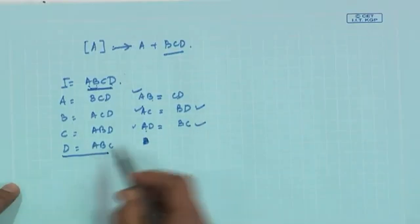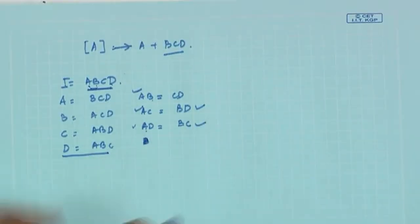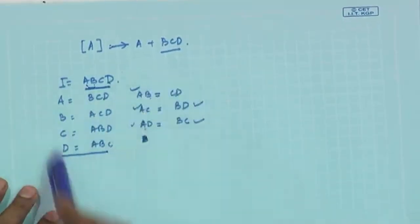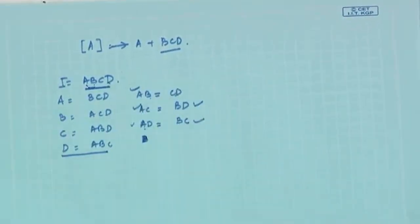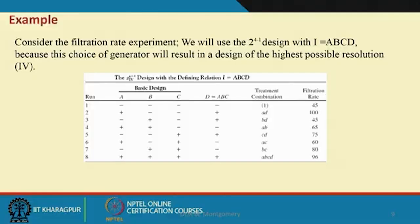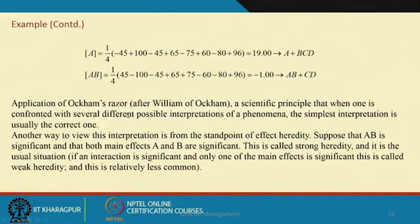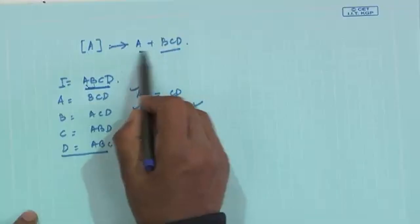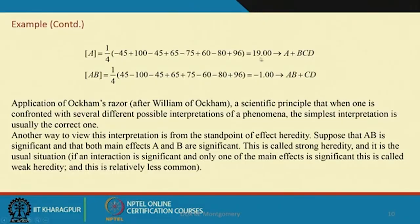Using this data, when you compute the effect of A you are basically computing A plus BCD, because of the alias structure. I equals ABCD; if you multiply with A you get BCD; with B you get ACD; with C you get ABD; with D you get ABC. So A bracket means A plus BCD. You can compute other effects similarly — all effects with their alias structure.